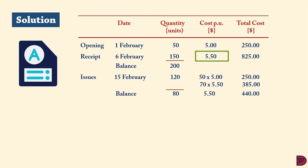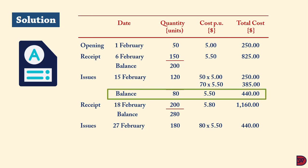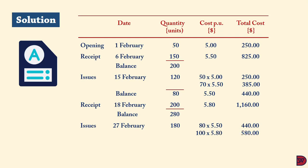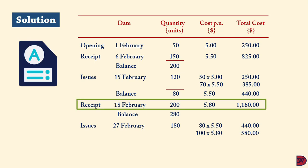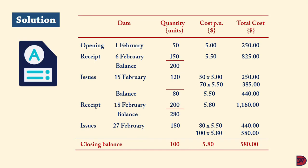Receipt on 18 February: 200 units × $5.80 = $1,160; balance = 280 units. Issue on 27 February of 180 units: first exhaust the existing 80 units at $5.50, then issue 100 units from the latest receipt at $5.80 = $580. At the close of February, the closing balance is 100 units at $5.80, giving a closing inventory value of $580, reported in current assets on the statement of financial position.